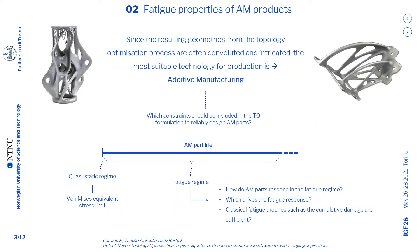The topology optimization has been studied since 1980. However, the final geometries obtained with this method were almost always complex and very difficult to be realized through traditional and conventional manufacturing techniques. Recently, the advances of additive manufacturing processes allow us to produce those geometries, even if convoluted and complex. However, it is crucial to understand which are the key constraints to be included in the topology optimization setup in order to safely design parts for additive production.